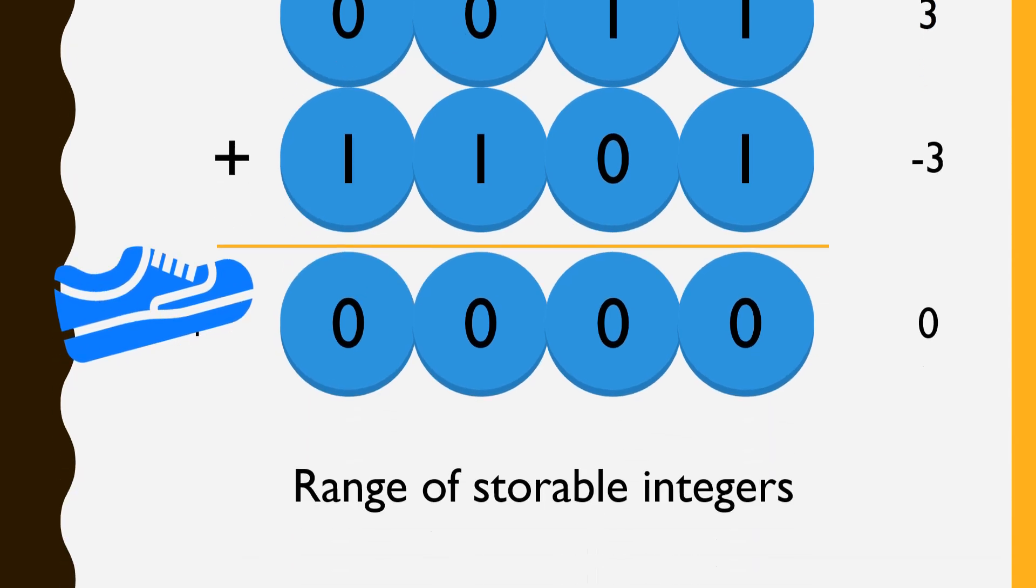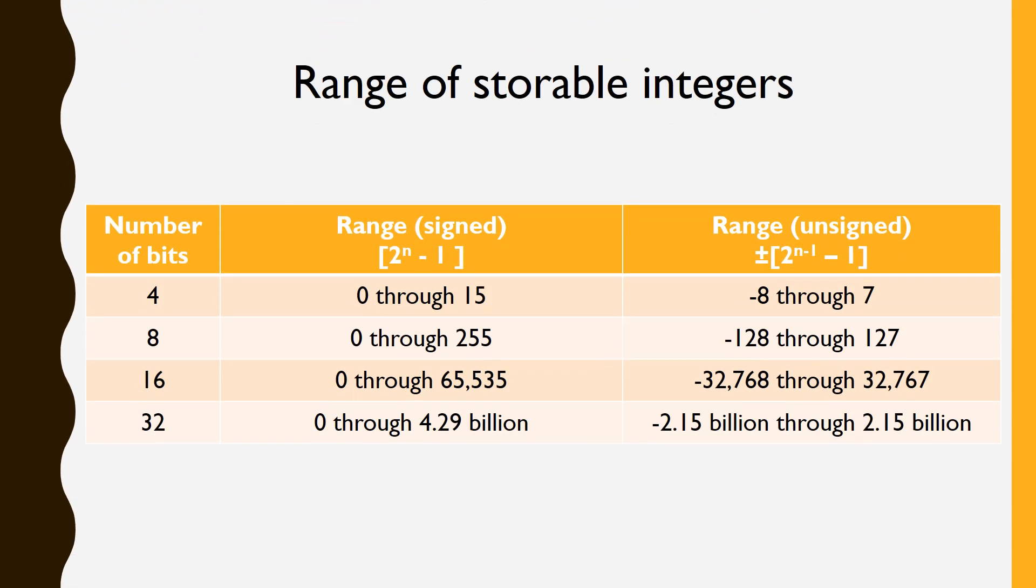2's complement successfully solves the problems of storing and manipulating negative numbers, but recognize that, by sacrificing the first bit for flagging the sign, we're changing the range of numbers we can represent. 4 bits can represent the numbers 0 through 15 without a signed bit, and negative 8 through positive 7 with a signed bit. A byte can represent 0 through 255 without a signed bit, and negative 128 through positive 127 with a signed bit.